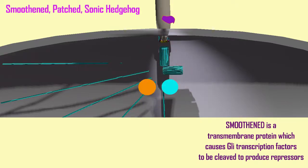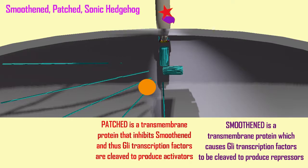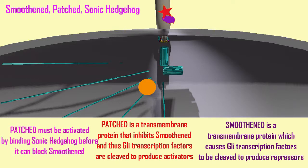When Smoothened directs the cleavage of the Gli transcription factors, repressors are formed. But another transmembrane protein can be associated with Smoothened — it is known as Patched. Patched can inhibit Smoothened, preventing it from directing the production of transcription repressors.